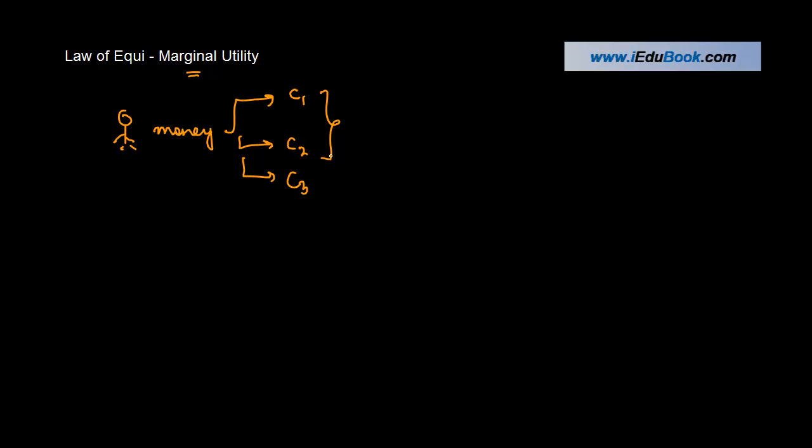Now according to this law, what happens is that whenever you spend any money, each rupee spent on a particular commodity, let's say C1, gives you a particular unit of satisfaction or the marginal utility.